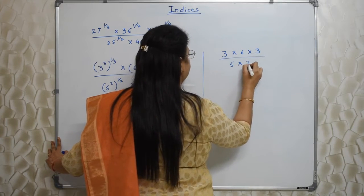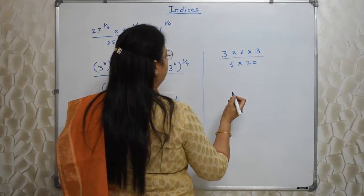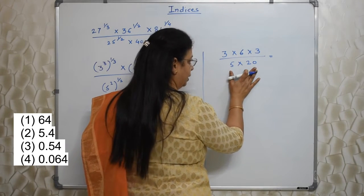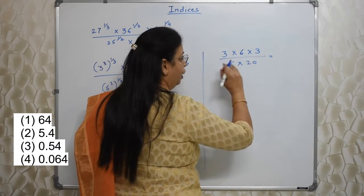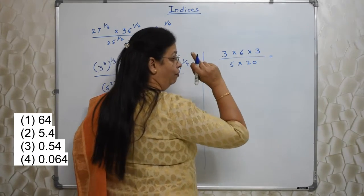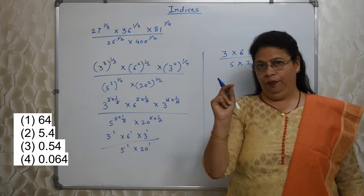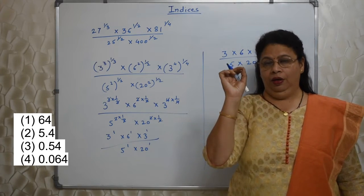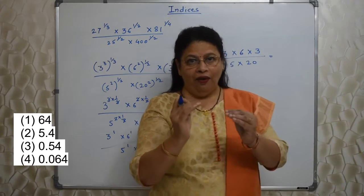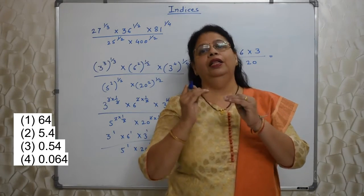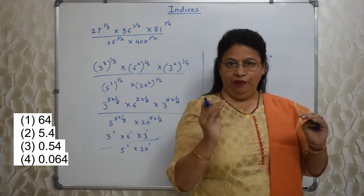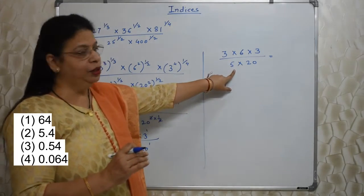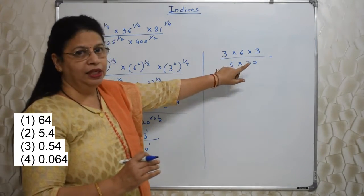Once we get this, the job is very easy. Whenever students see this kind of division, they start reducing it. You have to keep an eye on the options given to you. Your options are given in decimal, means you need to have number 10 or 100 in the denominator. Then your work will be very easy. I have 5 into 20 as 100. So why should I disturb this by doing division with this 6? No need.